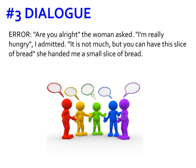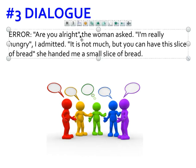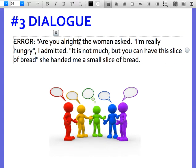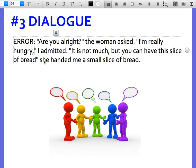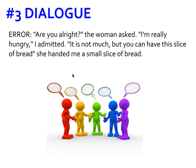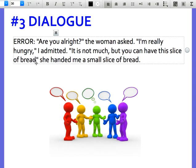Let's look at error number three: dialogue. This is one we've been talking a lot about, but I'm still seeing you make this error. One error is: 'Are you all right?' — that's a question, so it needs a question mark, and remember, punctuation always goes inside the quotation marks. Another error: 'I'm really hungry, I admitted' — I need to move that comma inside the quotation mark. A third example: 'It is not much, but you can have this slice of bread. She handed me a small slice of bread' — here, since she's not speaking in the second sentence, I need to capitalize it as a new sentence.